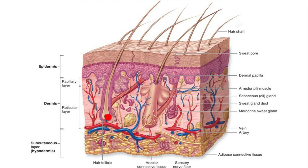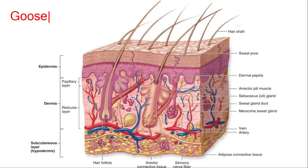Associated with each hair follicle is a small muscle called the arrector pili muscle. This is a smooth muscle. Upon nervous stimulation, this small muscle contracts, causing goose bumps.